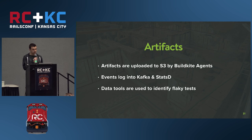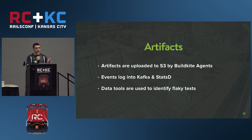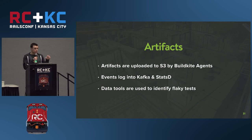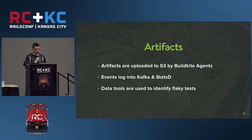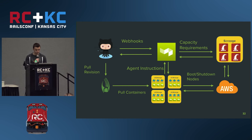For artifacts, at the end of a CI run, the agents would go into Docker, grab the artifacts, and upload them to S3. We also had an out-of-band service that got webhooks from Buildkite, dumped artifacts into Kafka, and emitted metrics to StatsD. All roads at Shopify lead through Kafka to data land, so we could use those artifacts to identify flaky tests. This was our first iteration.